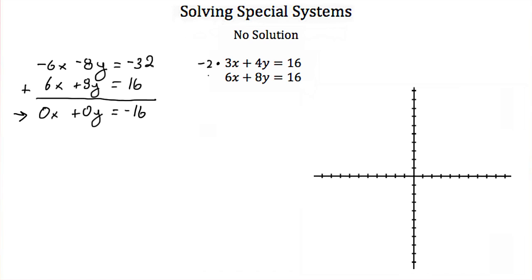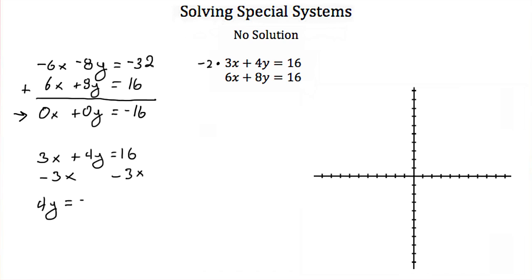So let's graph these and see if we can figure out what's going on. To graph them, I'm first going to rewrite both in slope-intercept form. For the first one, 3x plus 4y equals 16, I'm going to subtract 3x from both sides to get 4y equal to negative 3x plus 16, then divide everything by 4.